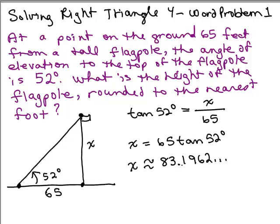So we don't want anything after the decimal point, but we have to decide if we're going to keep this 83 or if it's going to round up to 84. Since there's a 1 after the decimal point, that's less than 5, so it's going to keep it 83 feet.